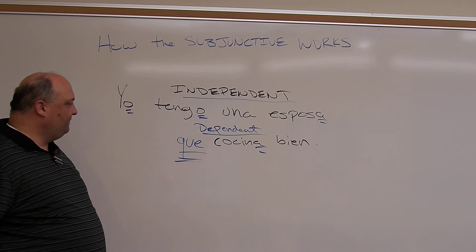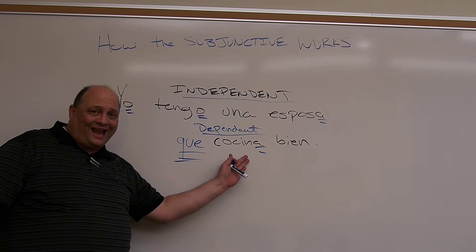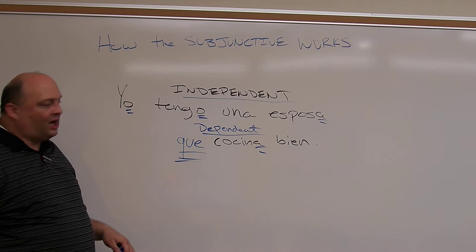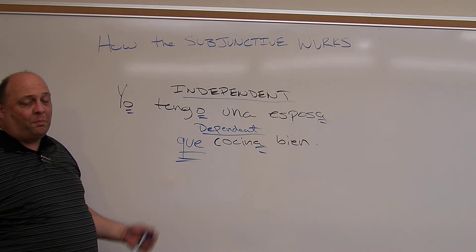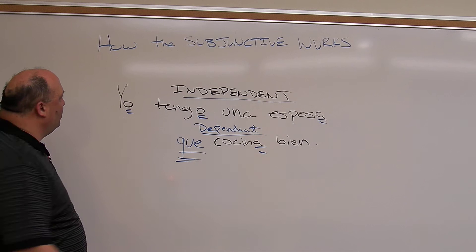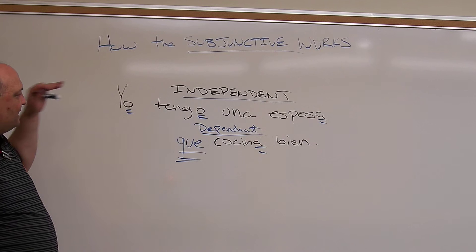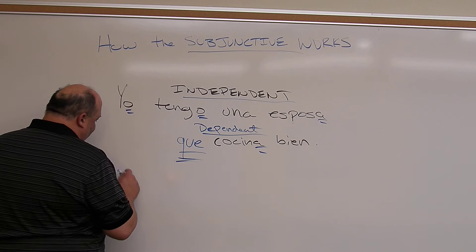This 'que' is very important in the subjunctive formula. Basically, it's the verb that comes after the 'que' that is going to change — depending on what comes before it. Now, this dependent clause depends on the independent clause for meaning. And if it doesn't like the meaning that the independent clause gives it, then it puts it in a bad mood — it's pretty picky. We call that mood the subjunctive mood.